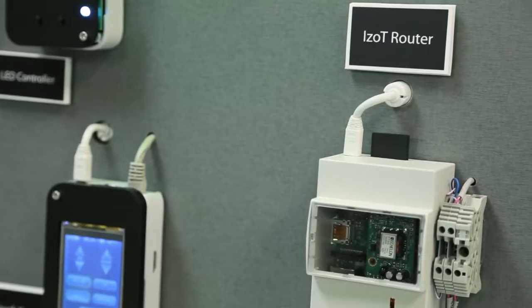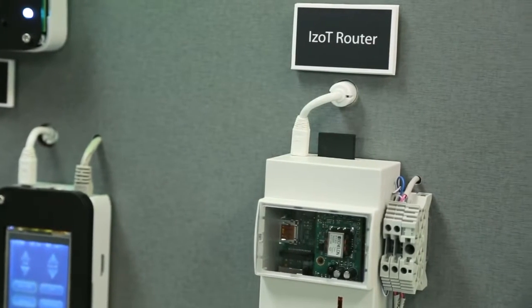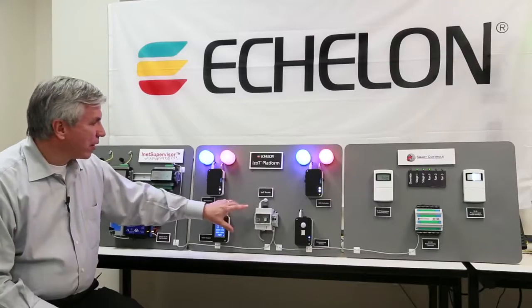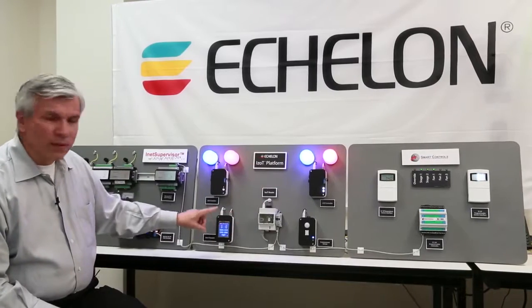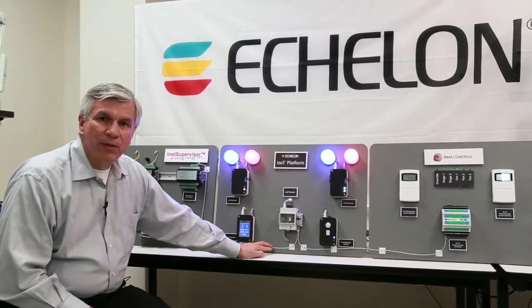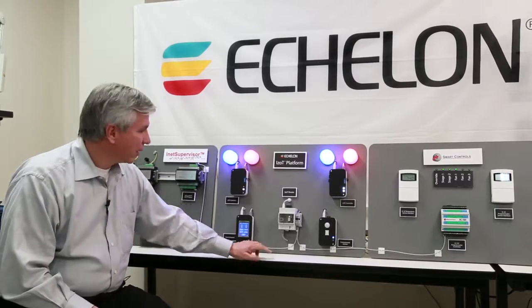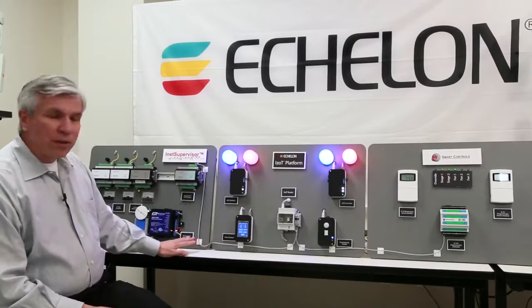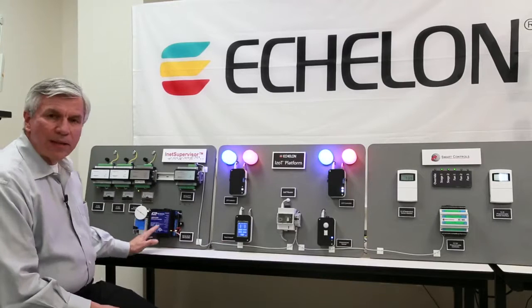Now these lights are also connected through Echelon's new iZOP router. This router connects the lights that are talking over ethernet and wifi to a simple free topology twisted pair network. This free topology twisted pair is running over here to this panel from iNet Supervisor.